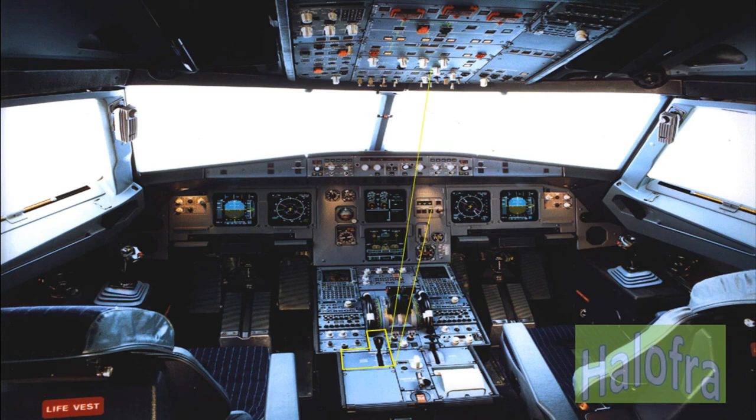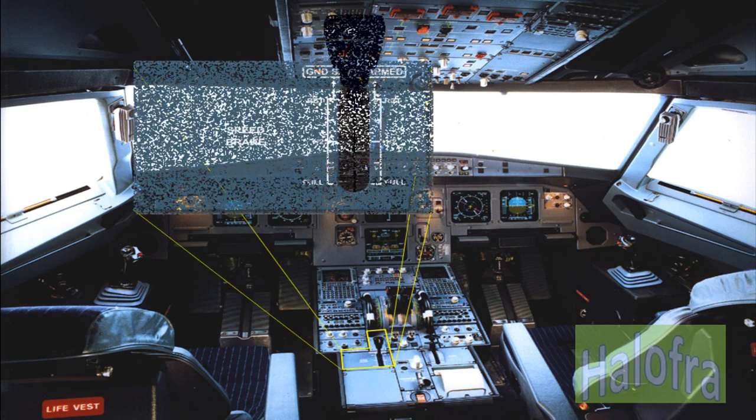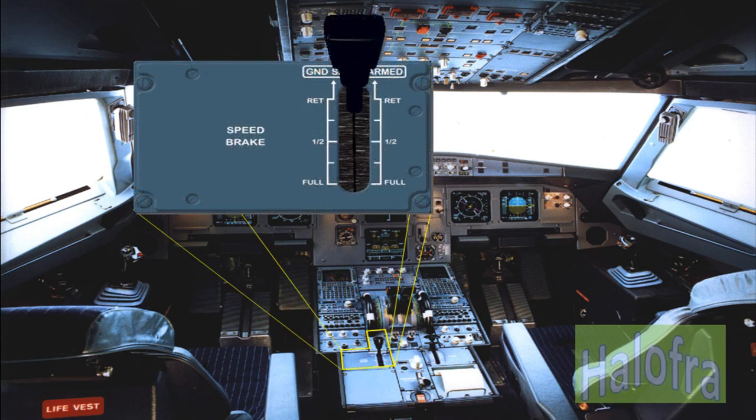A speed brake lever is located on the left side of the pedestal. To select speed brakes, the lever has to be pushed down and set to the required position. To arm the ground spoilers, the lever must be pulled up when in retracted position. Upon ground spoiler deployment, there is no movement of the lever, as it is in electrical control.